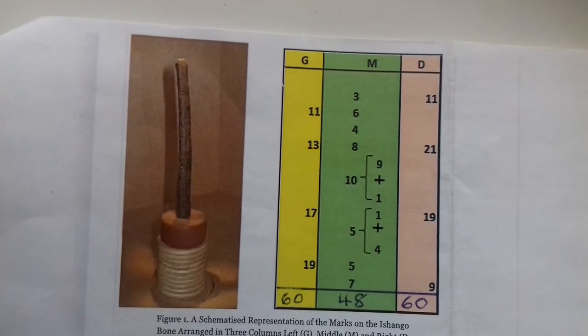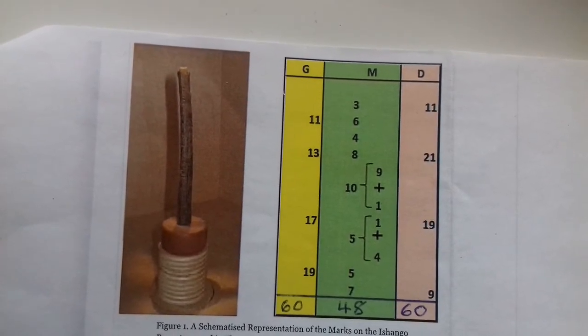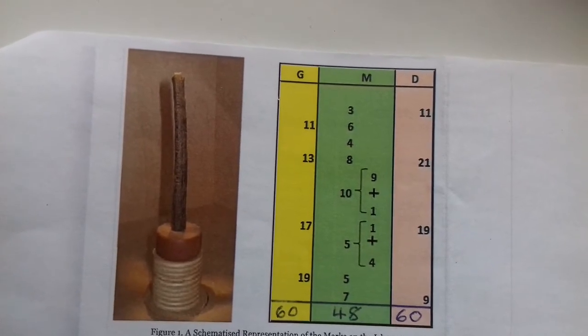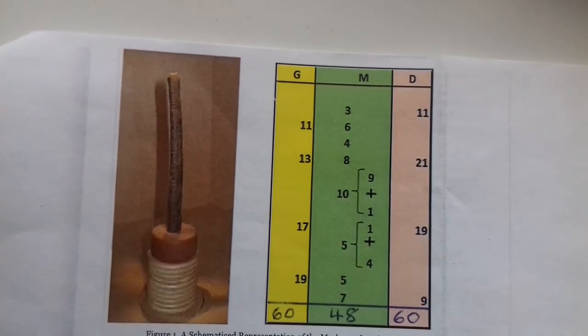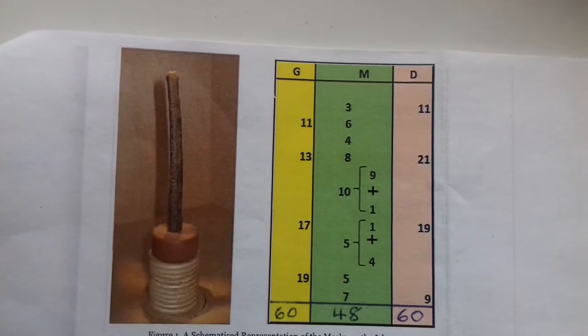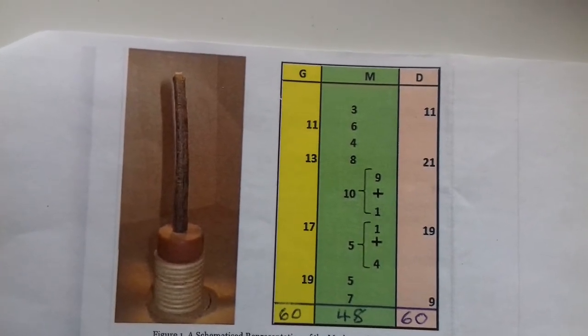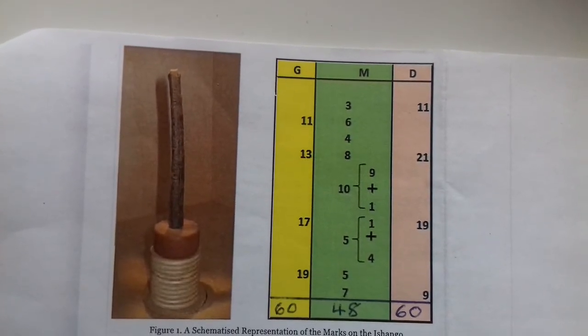This would seem to imply a deliberate representation of the numbers which are eliminated from the natural numbers, leaving only the primes 5 and 7, that is, for numbers above 3, for reasons which are not quite clear. But these numbers eliminated are the numbers deduced in the top part of column M.